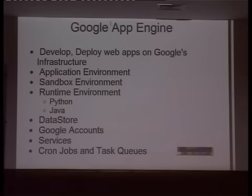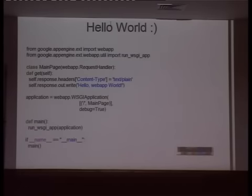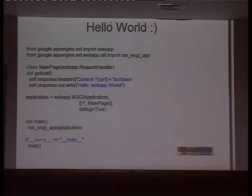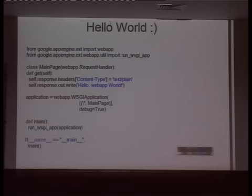Let's proceed with a very simple Hello World application. One important runtime constraint: any request can run for a maximum of 30 seconds only. If your server-side processing takes more than 30 seconds, App Engine will raise a DeadlineExceededError and kill that application. You must make sure all your backend processing is within the 30-second time limit. There are times when this seems small, but there are workarounds — we'll talk about those later.